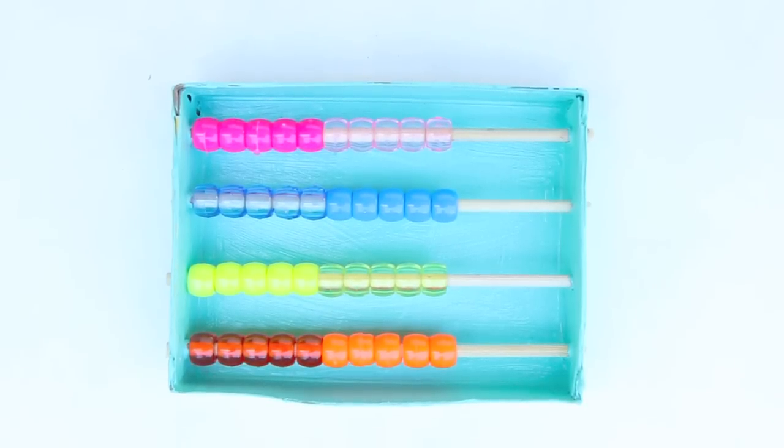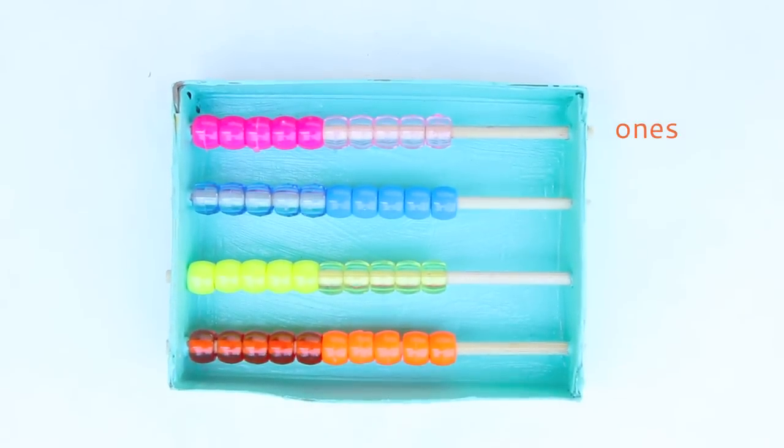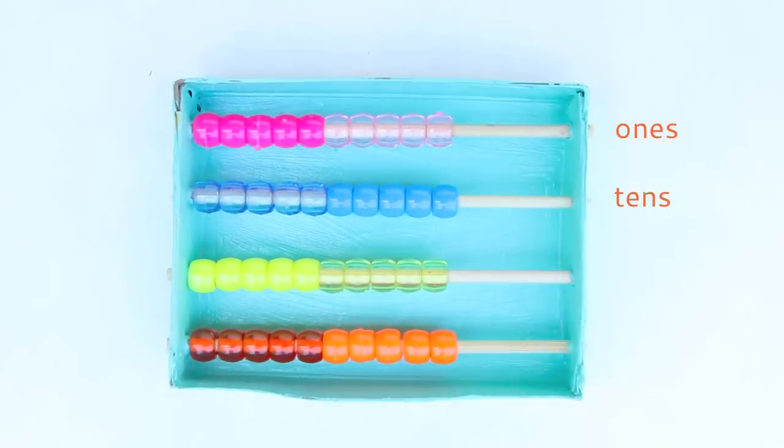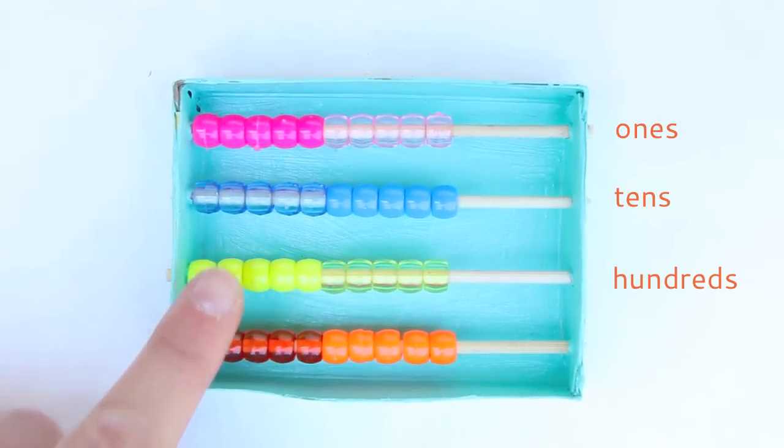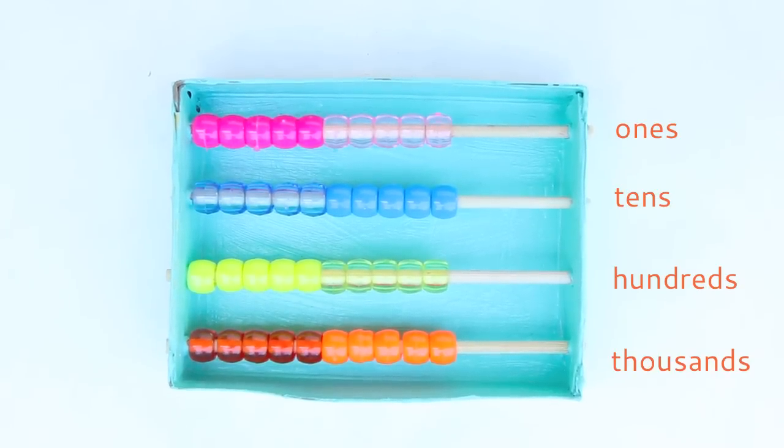When you're using an abacus, each row represents a place value. The first row represents ones, the second row represents tens, the third row represents hundreds, and the fourth row, the thousands.